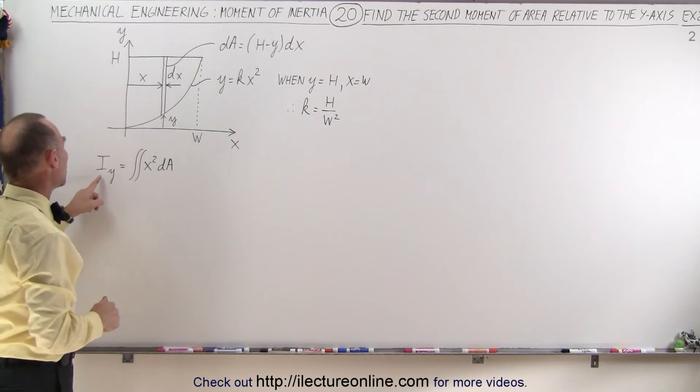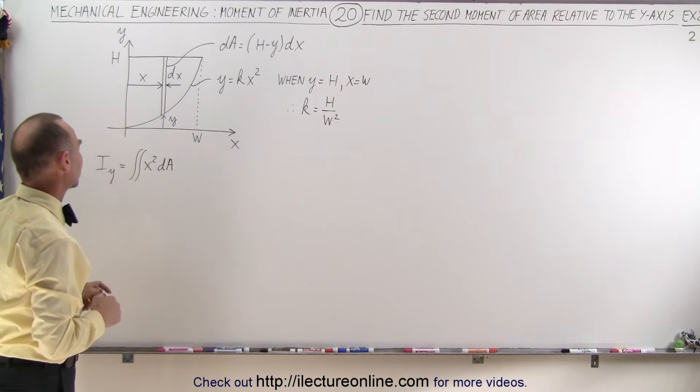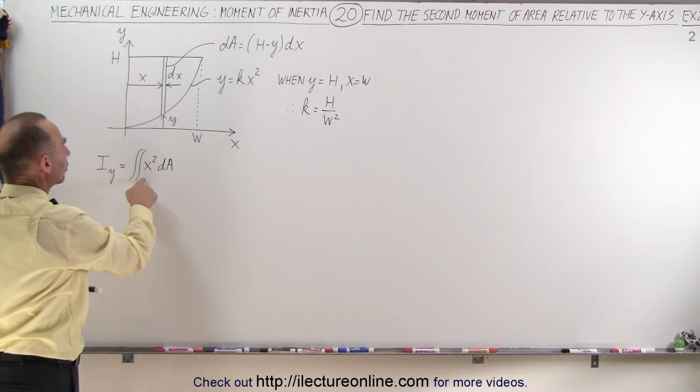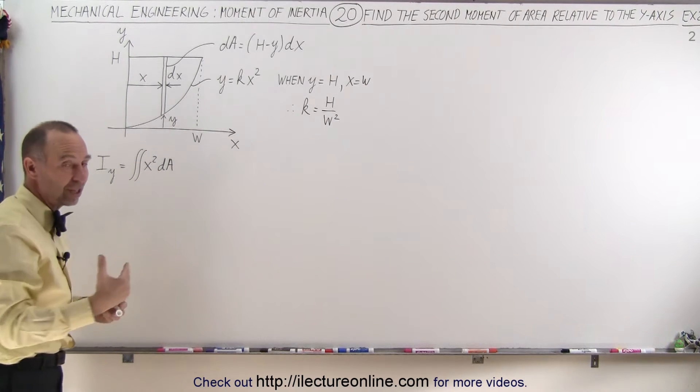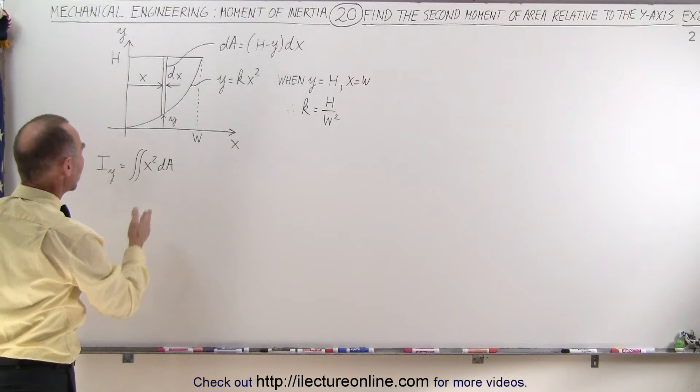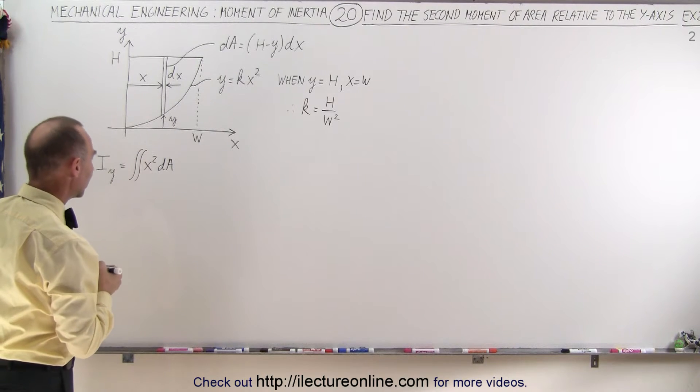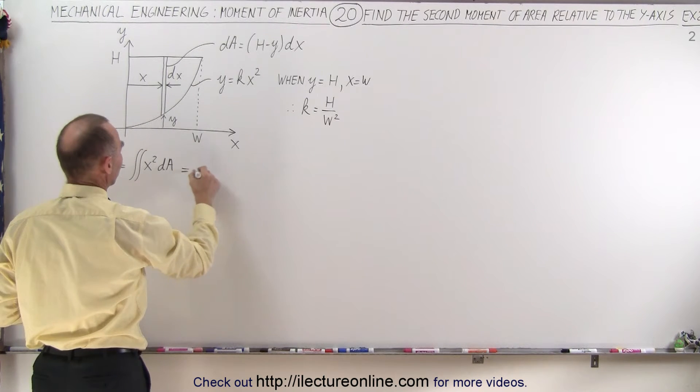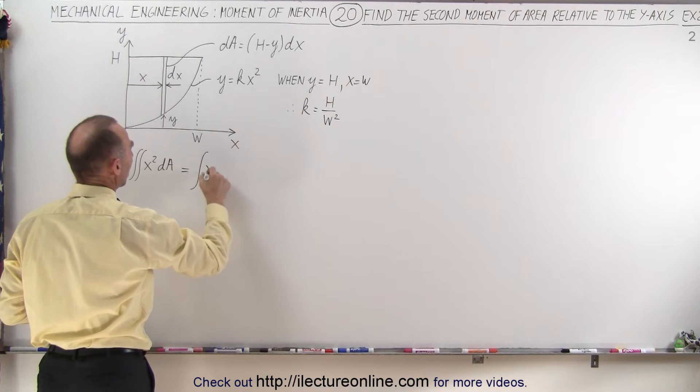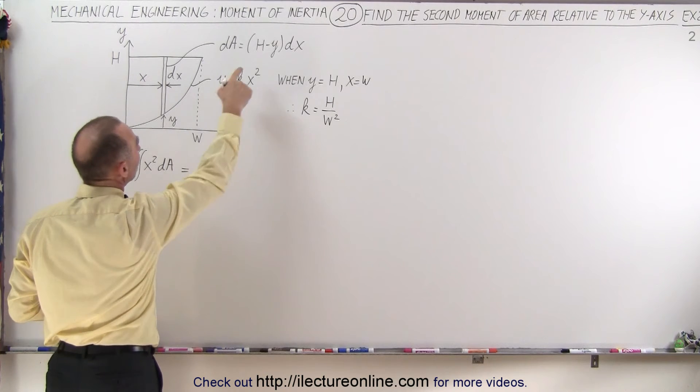Now let's find the second moment of area relative to the y-axis. It's going to be the double integral of x squared dA, but as we develop the integral it will simply become a single integral. This is going to be equal to the integral of x squared times the quantity h minus y times dx.